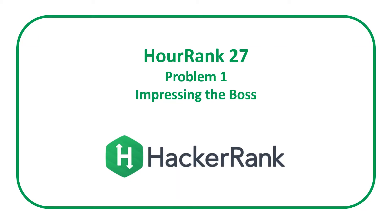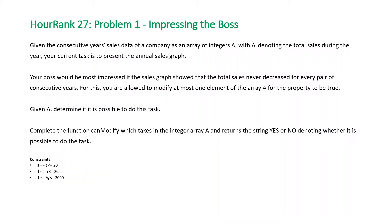Welcome to a Code Report solution video. In this video we're going over the solution to problem one from HackerRank Our Rank 27, entitled 'Impressing the Boss.' The question states: given the consecutive years sales data of a company as an array of integers A, with A[i] denoting the total sales during the year, your task is to present the annual sales graph. Your boss would be most impressed if the sales graph showed that the total sales never decreased for every pair of consecutive years. For this, you are allowed to modify at most one element of the array A.